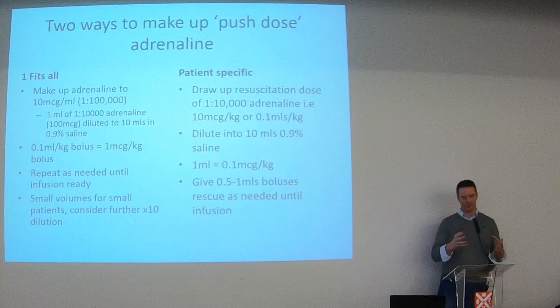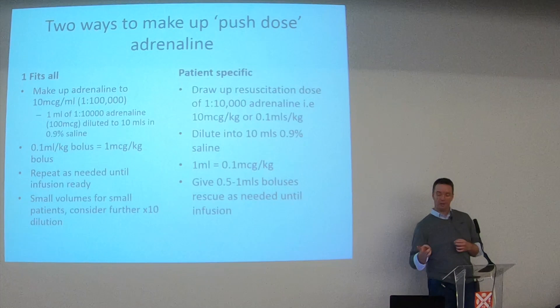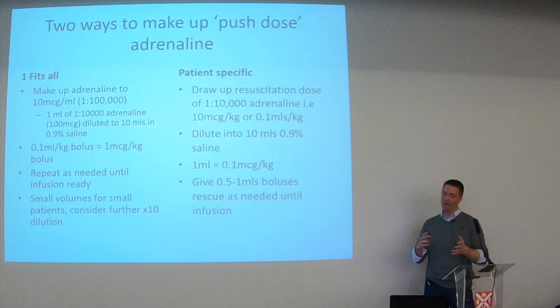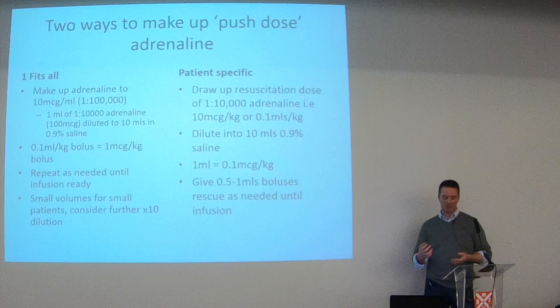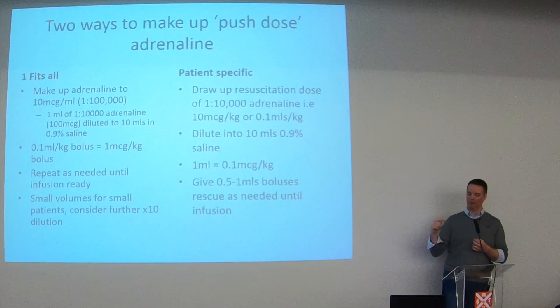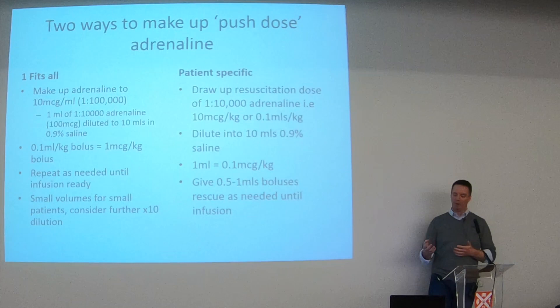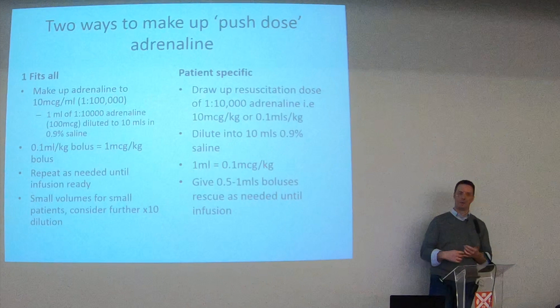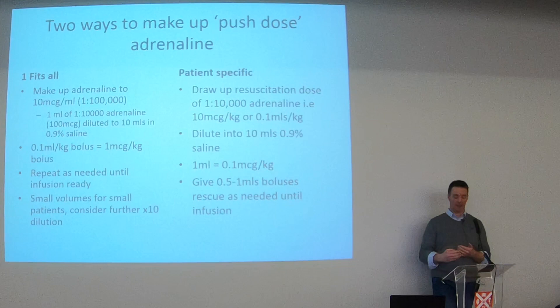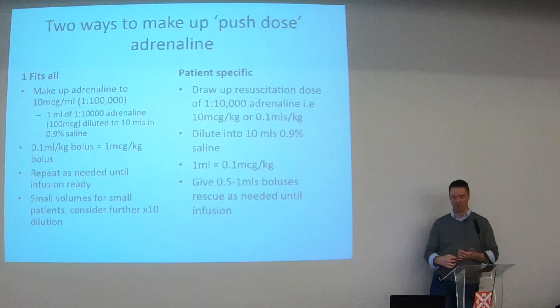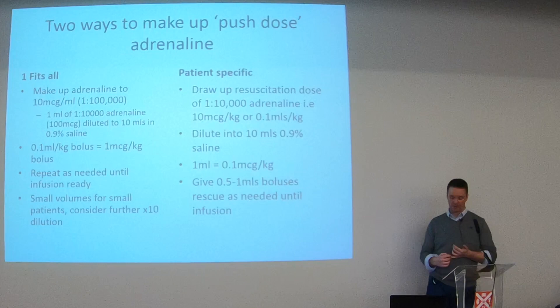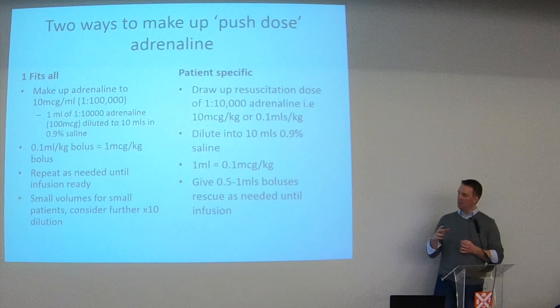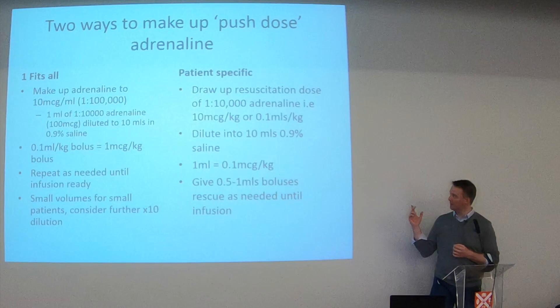What if the patient needs just a little bit more of a push - not in arrest but maybe dropped their blood pressure or heart rate a little? There are two ways to make up a rescue dose of adrenaline for paediatrics. The one-fits-all approach: make your adrenaline up to 10 micrograms per mil - take the mini-jet adrenaline and dilute one mil up to 10 mils. Then give 0.1 mils per kilo as a bolus, which gives one microgram per kilo. You might need slightly less - 0.5 mils per kilo possibly - and that gives a temporary boost while doing other stabilising measures.